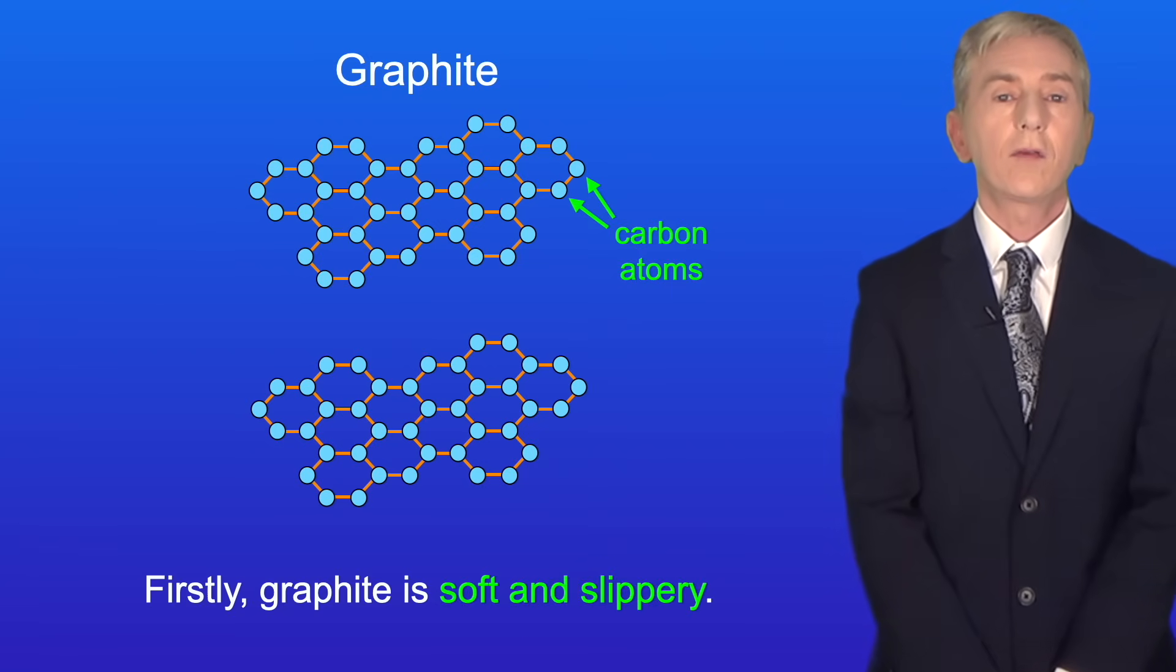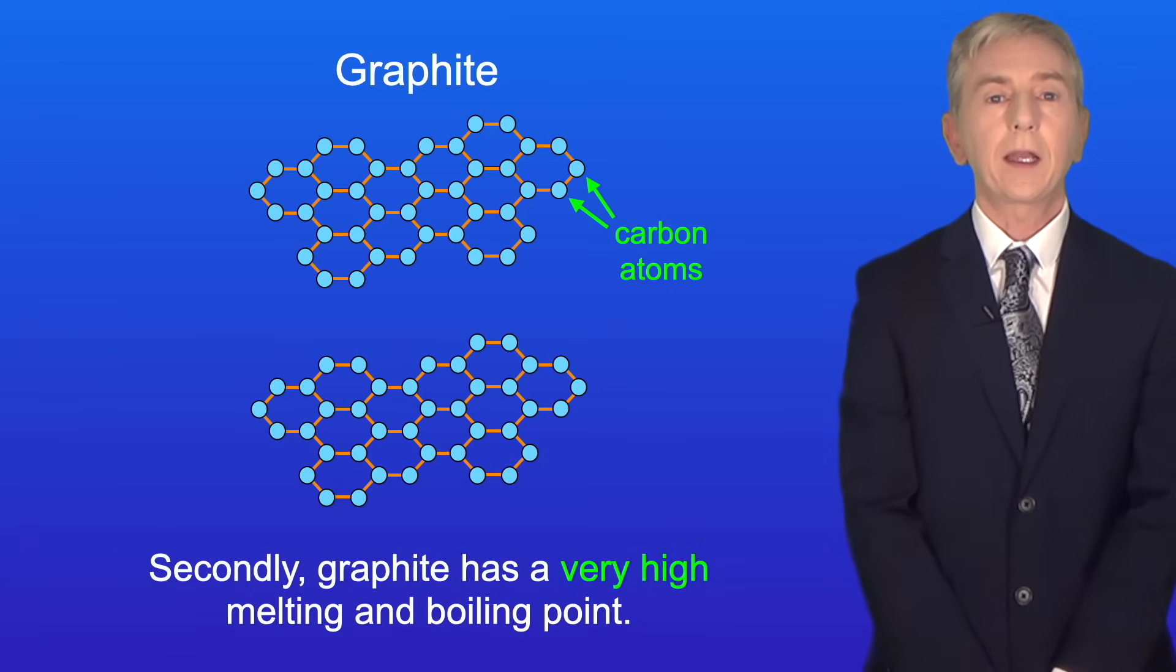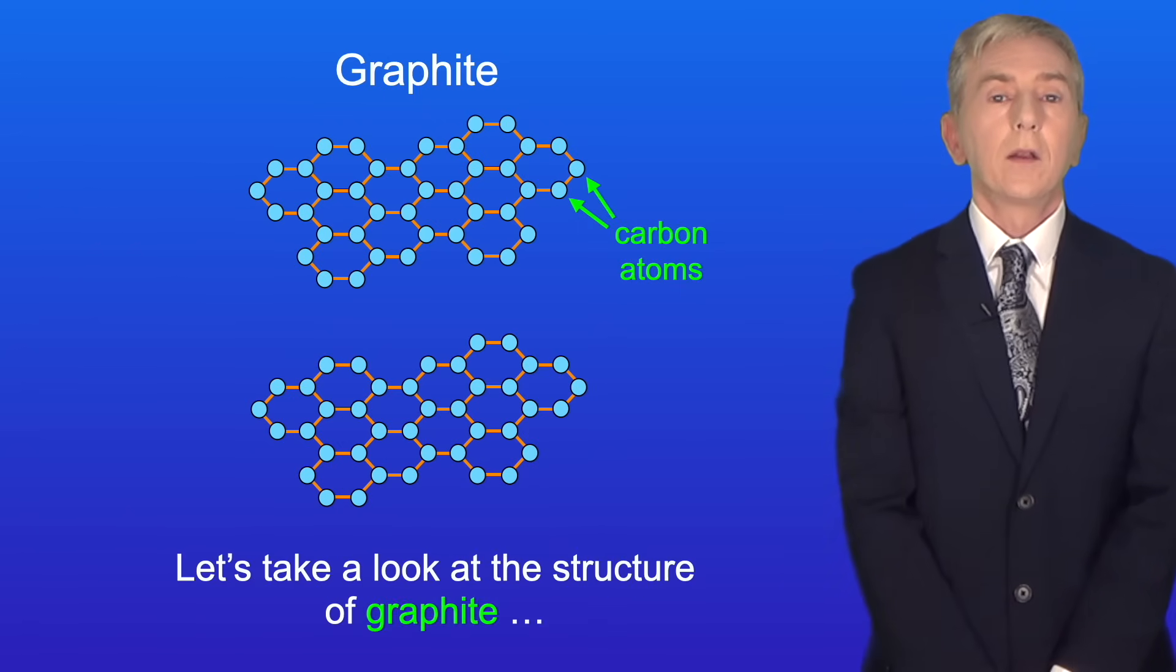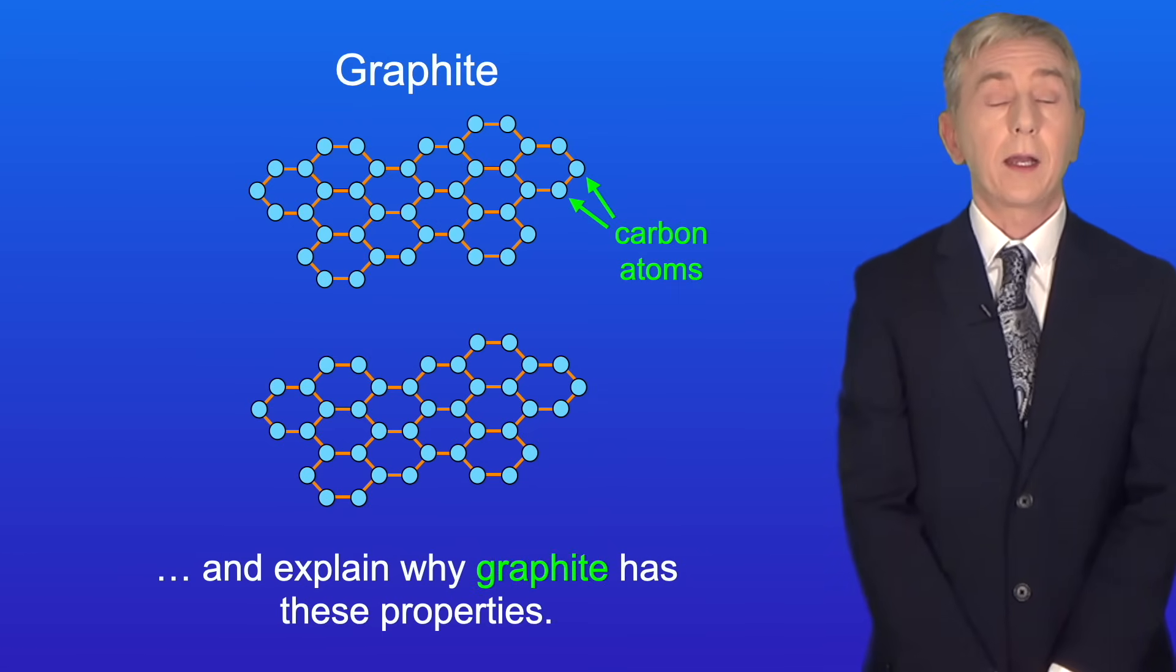Firstly graphite is soft and slippery. Secondly graphite has a very high melting and boiling point. And lastly graphite is a good conductor of both electricity and heat. So let's take a look at the structure of graphite and explain why graphite has these properties.